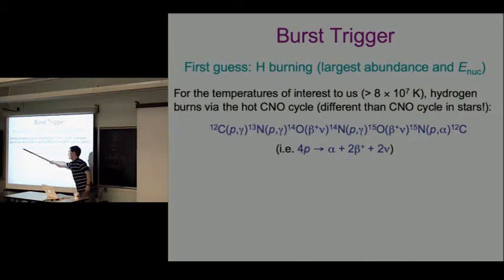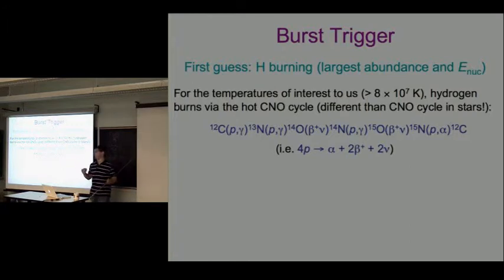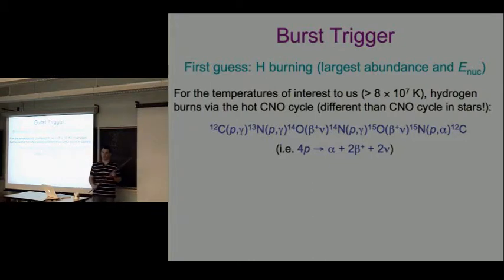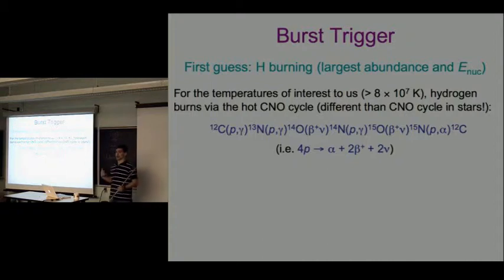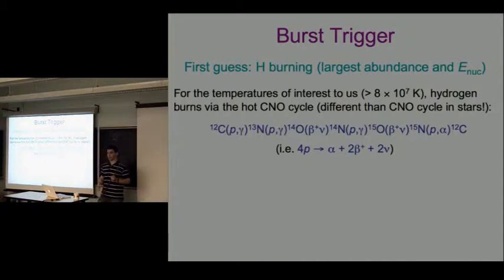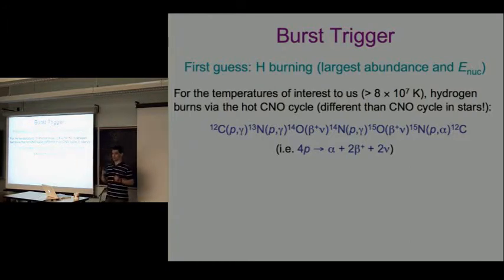In the hot CNO cycle notation common in nuclear astrophysics: carbon-12 fuses with a proton, releases a gamma photon to give nitrogen-13, which fuses with a proton to give oxygen-14. Oxygen-14 beta decays, releasing a positron and a neutrino, giving nitrogen-14, and so on. Carbon, nitrogen, and oxygen are simply catalysts - what we're doing is converting four protons to helium-4 and two positrons, converting hydrogen to helium as any normal star would do.